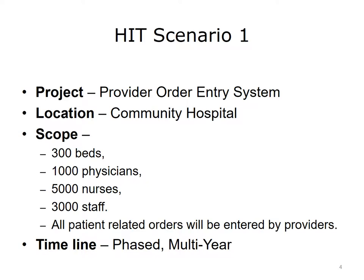Your project scope outlines the project boundaries and deliverables — that is, everything that affects or is affected by the project — and the expected results. This scenario takes place in a community hospital with about 300 beds, 1,000 physicians, 5,000 nurses, and 3,000 ancillary staff. The project will be phased in over several years, starting in the emergency department before rolling throughout the hospital. Because this is a complex project implemented in stages, the scope is tiered, with an overall scope for the entire project and individual scopes for each department or unit.